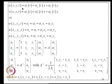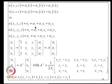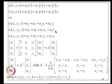Starting with U = alpha_1 + alpha_2*X + alpha_3*Y, at node 1 (X1,Y1) we impose U1 = alpha_1 + alpha_2*X1 + alpha_3*Y1, similarly at node 2: U2 = alpha_1 + alpha_2*X2 + alpha_3*Y2, and the third equation similarly. Writing this in matrix form, the alphas can be expressed in terms of the nodal values U1, U2, U3 using the inverse of matrix A, where A_0 is the area-related quantity appearing in A-inverse.